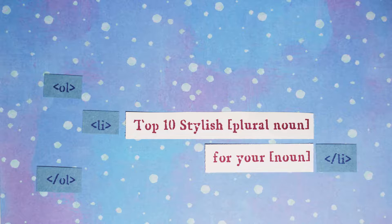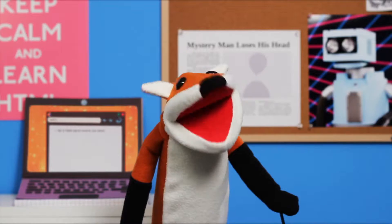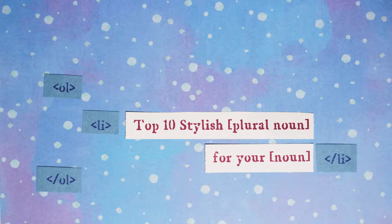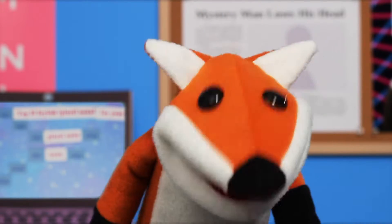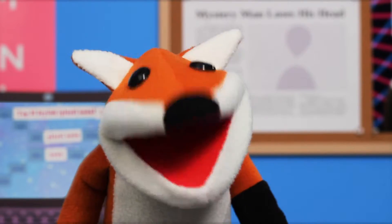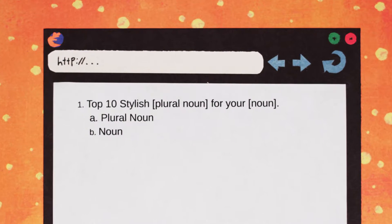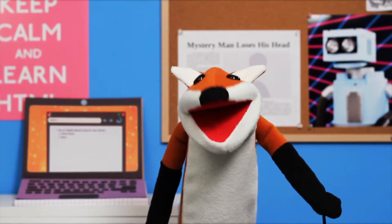Number one: top 10 stylish [plural noun] for your [noun]. We can pretty much stick any words we want into the blanks. Let's nest another ordered list inside this list item for all the blanks in the title. Because this list is nested inside of our top 10 list, it uses letters of the alphabet to indicate their order instead of numbers. Now I'll take suggestions from my viewers to fill in the blanks.